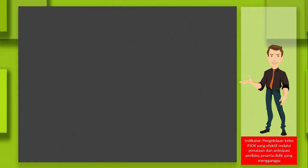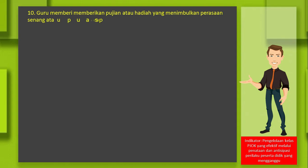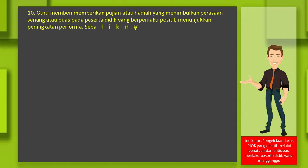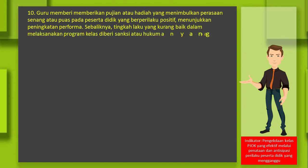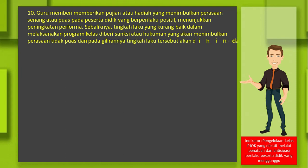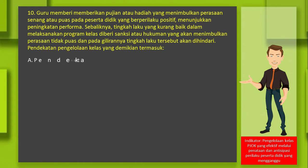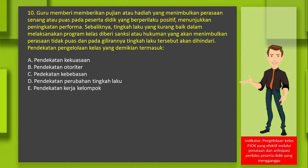Indikator berikutnya: pengelolaan kelas yang efektif melalui penataan dan antisipasi perilaku peserta didik yang mengganggu. Contoh soal nomor 10: guru memberikan pujian atau hadiah yang menimbulkan perasaan senang pada peserta didik yang berperilaku positif, sebaliknya tingkah laku kurang baik diberi sanksi atau hukuman. Pendekatan pengelolaan kelas yang demikian termasuk: A. Pendekatan kekuasaan, B. Pendekatan otoriter, C. Pendekatan kebebasan, D. Pendekatan perubahan tingkah laku, E. Pendekatan kerja kelompok. Jawabannya adalah D: pendekatan perubahan tingkah laku.